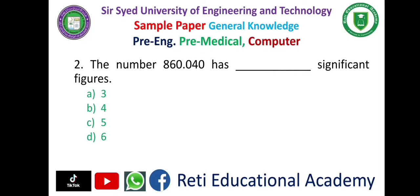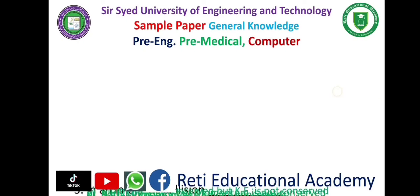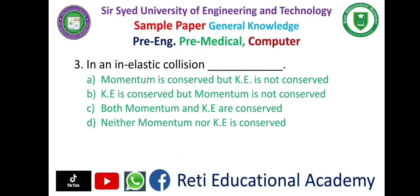Question 2: The number 860.040 has dash significant figures — A. 3, B. 4, C. 5, D. 6 — and the correct answer is D. 6.